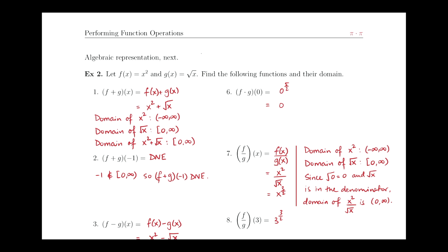And if we graph those two domains, so let's say this is zero, the domain for square root of x is zero to infinity, and the domain for x squared is negative infinity to infinity, so the entire number line. And where is the overlap? The overlap is only from zero to infinity.